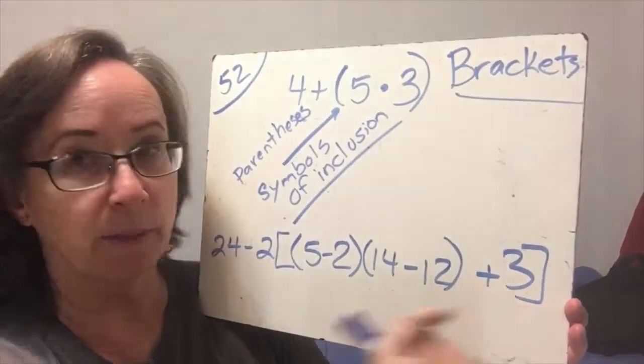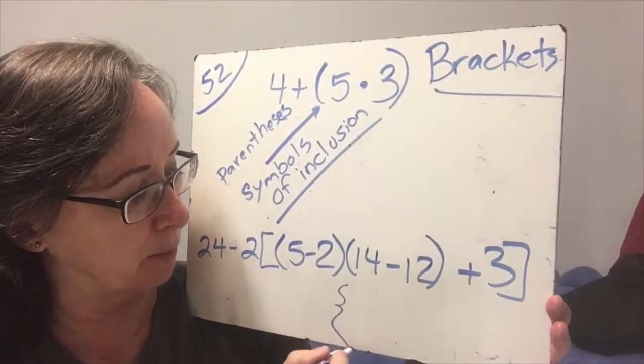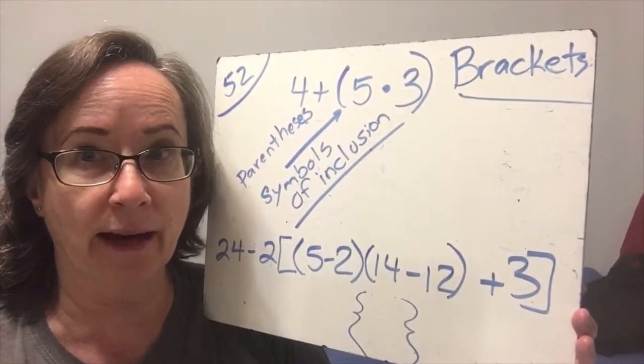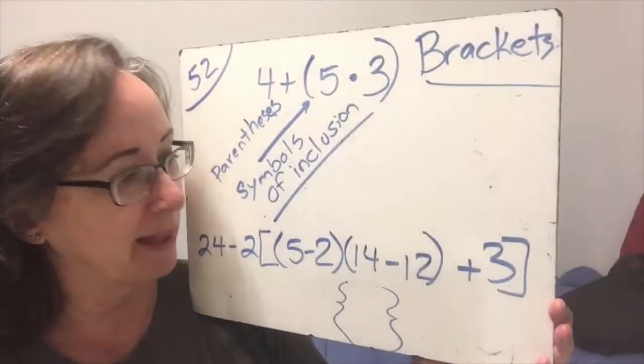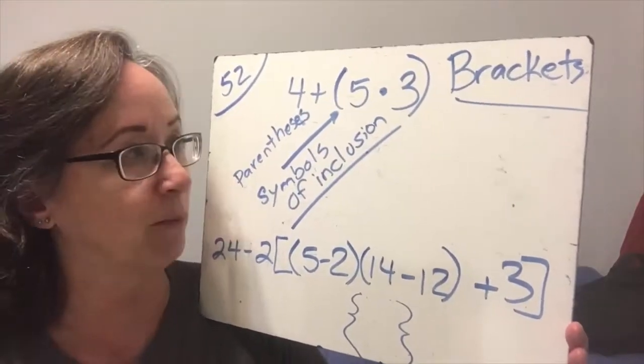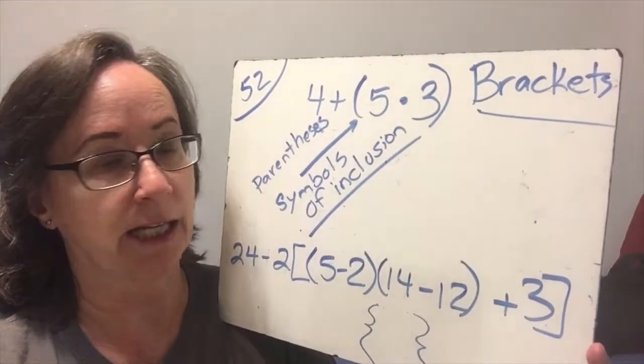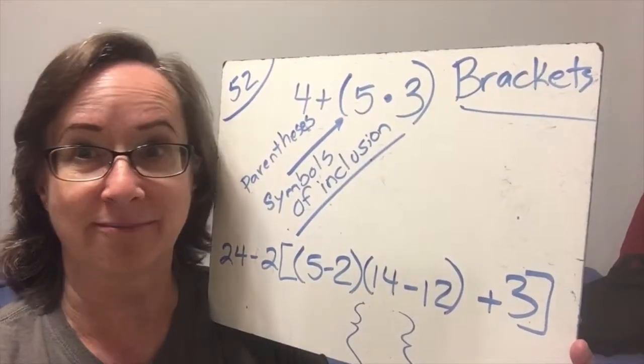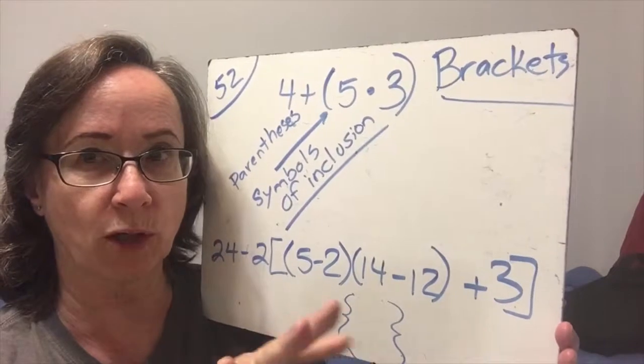Sometimes we'll even use the braces when we get so many things going on that we need yet another symbol of inclusion. So they're all symbols of inclusion, and we always do symbols of inclusion left to right and inside out, which means we're going to start innermost and work outwards.